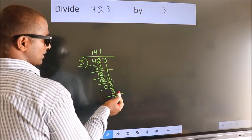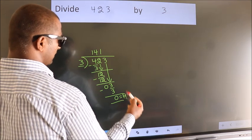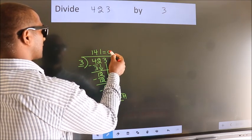No more numbers to bring down. So we stop here. This is our remainder. This is our quotient.